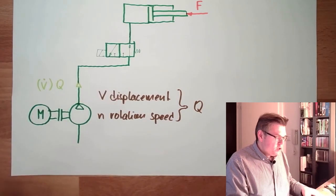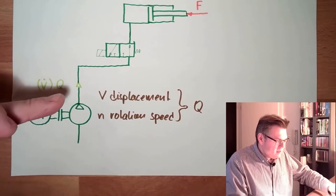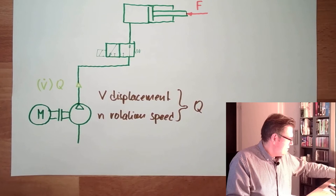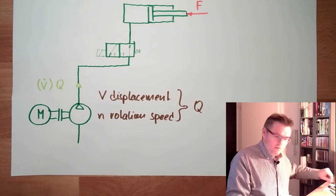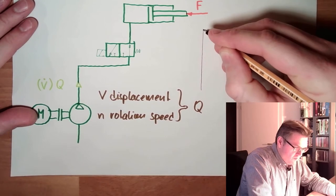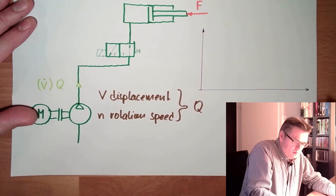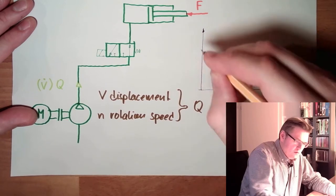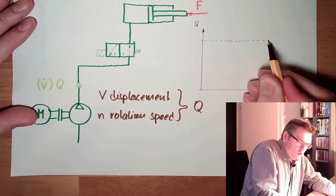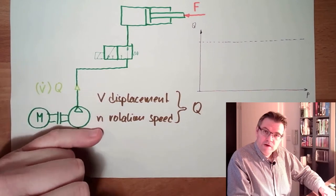So the pressure is nothing more than the braking of this flow. There is a typical characteristic of a pump, a pump characteristic, looking like this. If this is the flow, this is the pressure P, this is the flow Q. There is somewhere the flow which we shall have, the theoretical flow from displacement and rotation speed.